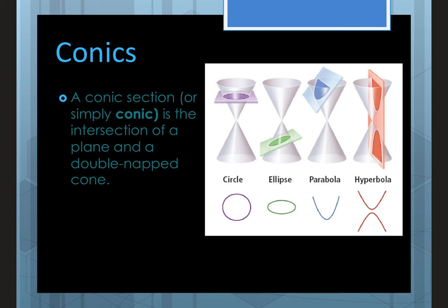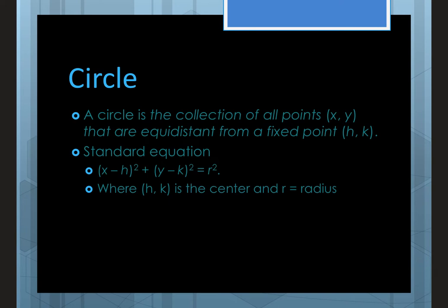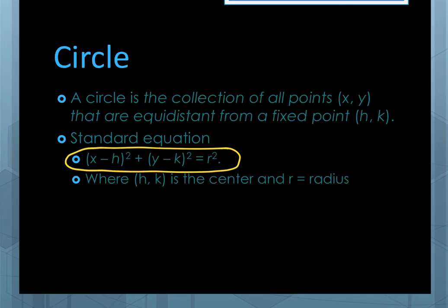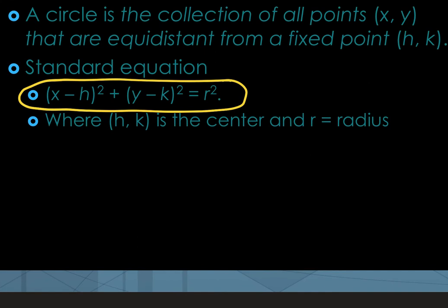That's where all these shapes come from. Today we start with circles and parabolas, then ellipses, then hyperbolas. A circle is the collection of all points (x, y) that are equidistant from a fixed point. The standard equation is (x − h)² + (y − k)² = r², where (h, k) is the center and r is the radius. You'll either be given information to write the equation, or given the equation to find information — it works both ways for all the conics.